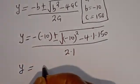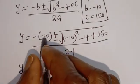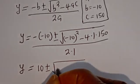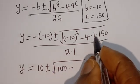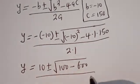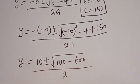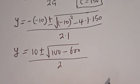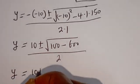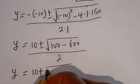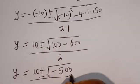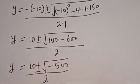Y is equal to minus (minus 10), that is 10, plus or minus square root of (minus 10) squared minus 4 times 1 times 150, divided by 2 times 1. That gives us Y equal to 10 plus or minus square root of 100 minus 600, which is minus 500, all divided by 2.